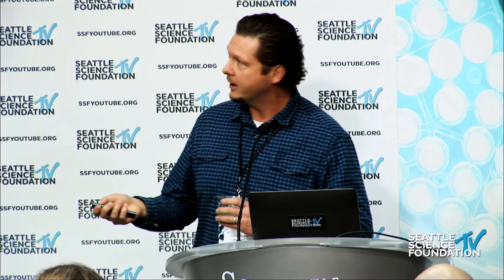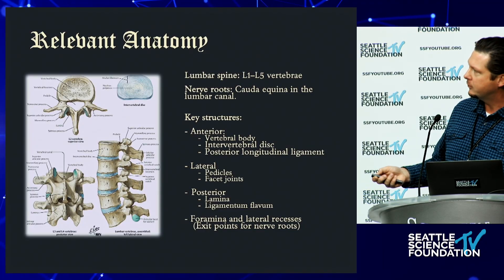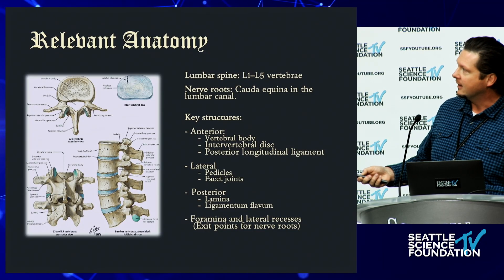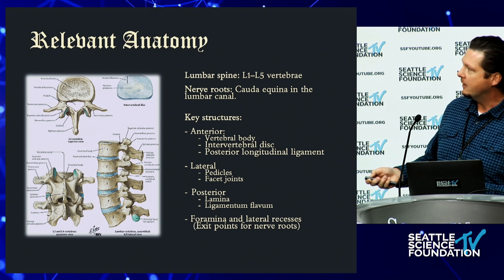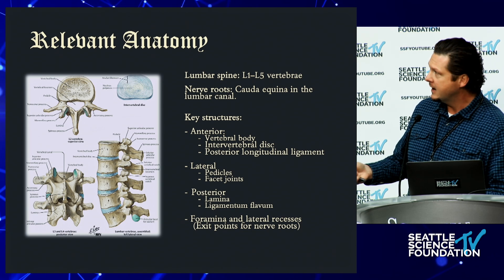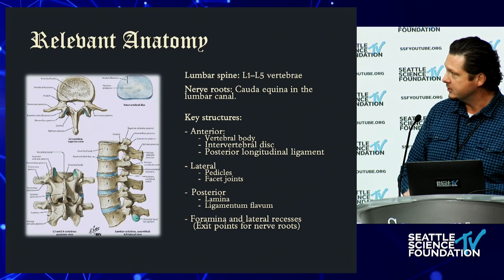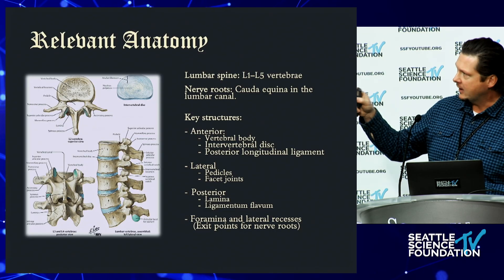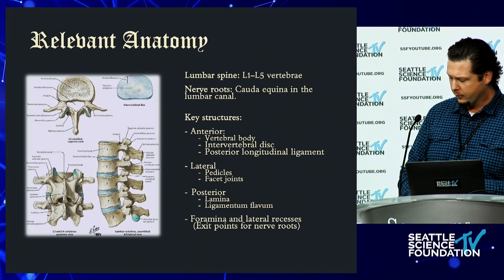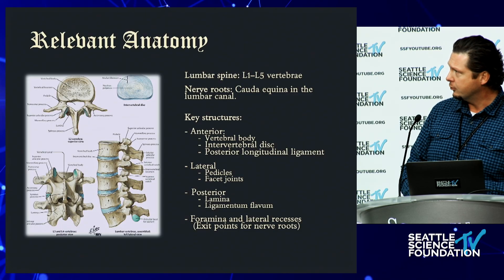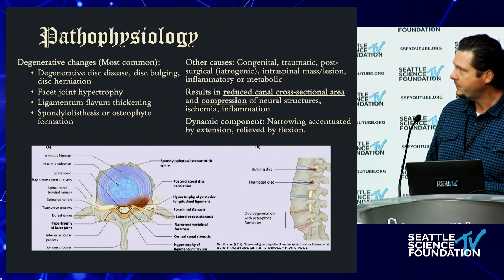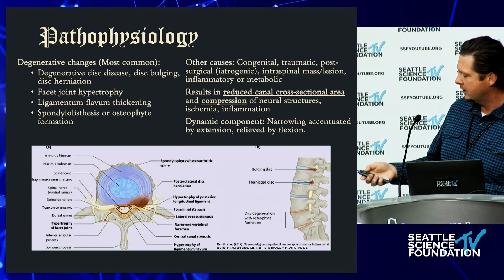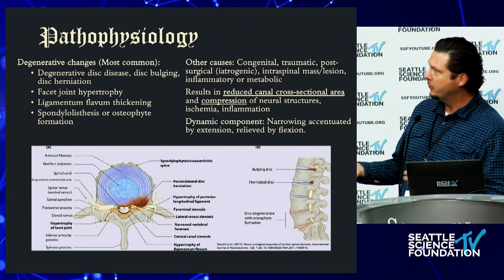Looking at relevant anatomy: anteriorly we have the vertebral body, the disc, and the posterior longitudinal ligament; laterally the pedicles and facet joints; and posteriorly the lamina and the ligamentum flavum, as we were discussing with the MILD procedure. Outside those areas are the spaces — neuroforamen, lateral recess, and central canal — where the neural structures reside and can be compressed.